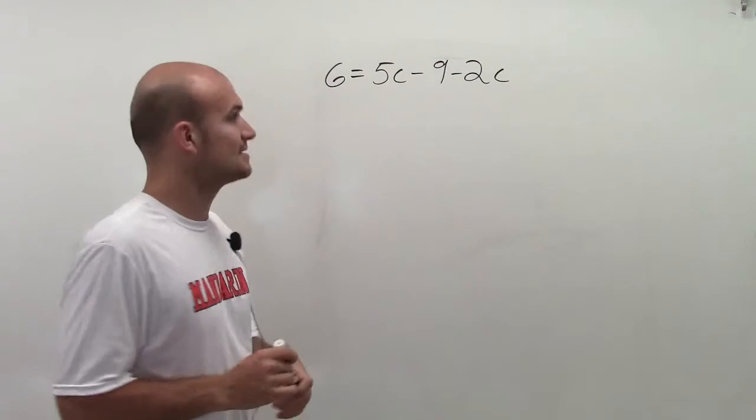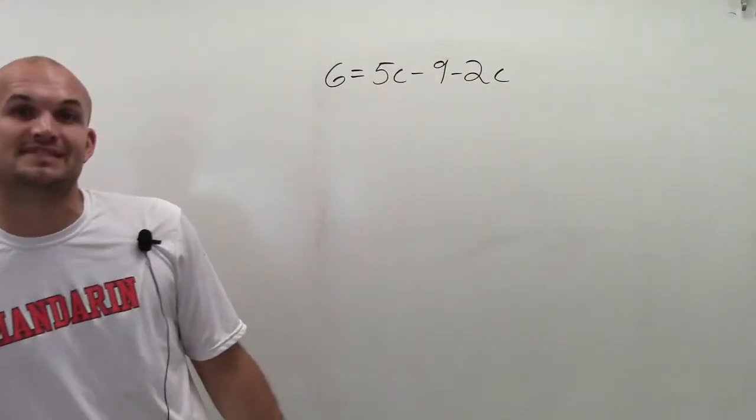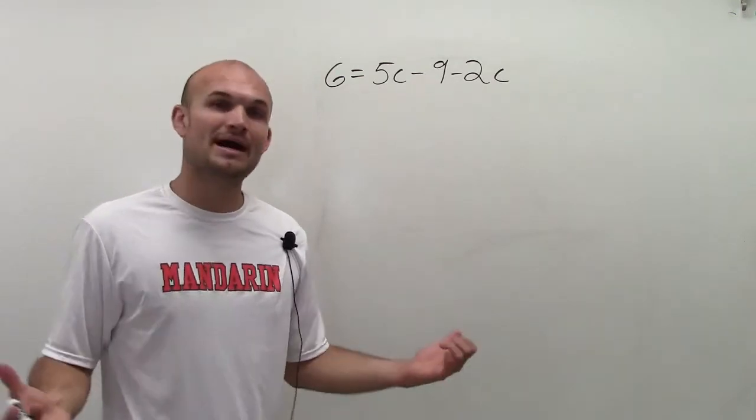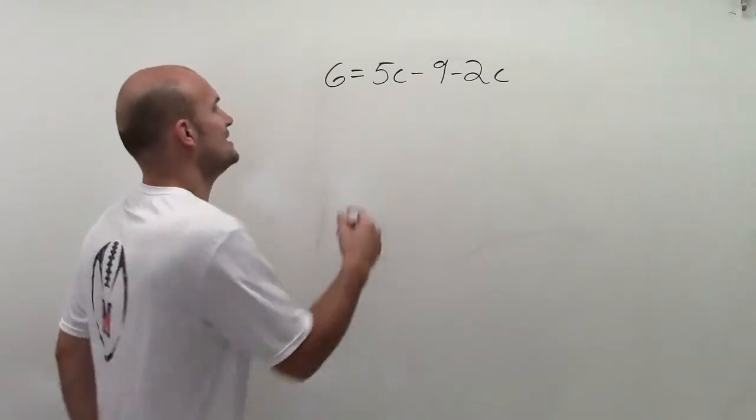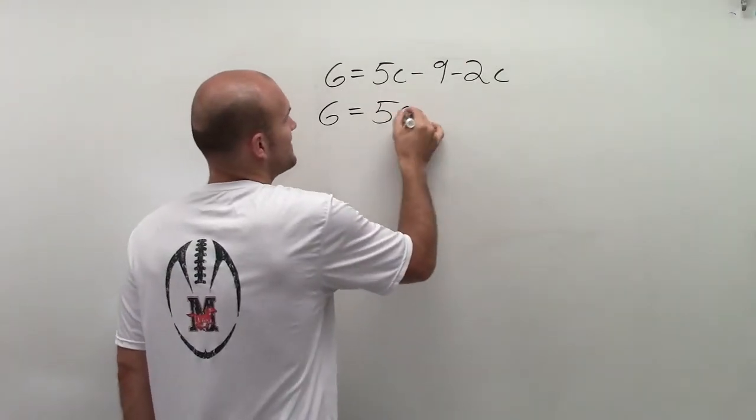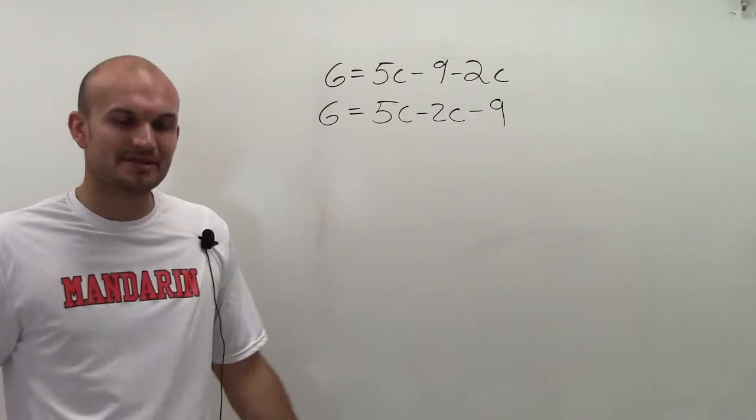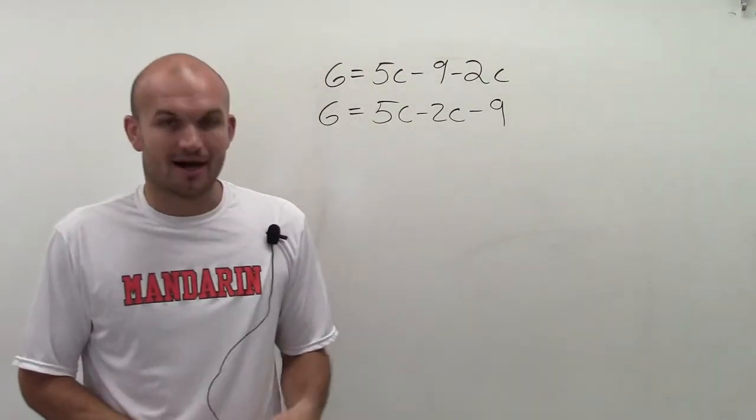The easiest way I like to combine them is, the 5c and the 2c both have a linear factor of c, so you can combine them. But a lot of times, why don't you rewrite them to make sure you can see that and say 5c minus 2c minus 9, right? You can rewrite these using the commutative property of addition.